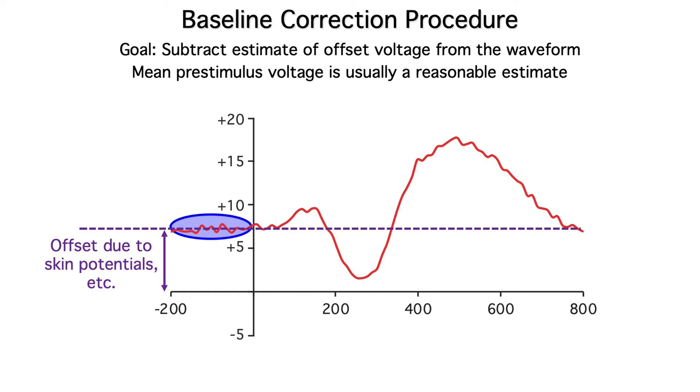If we take the mean voltage over the 200 milliseconds prior to the stimulus, most of the random EEG noise will average out, and we'll be left with a reasonable estimate of the offset.